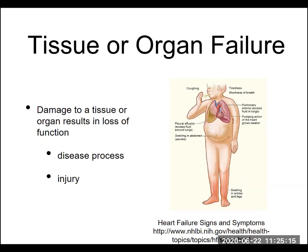Or damage could be the result of an injury. You can look at a spinal cord injury where a person was in an accident, had trauma to their back, damaged their spinal cord, and is now paralyzed from the region of the injury down. What we're looking at is how we can treat this tissue or organ failure and try to restore function within the body.